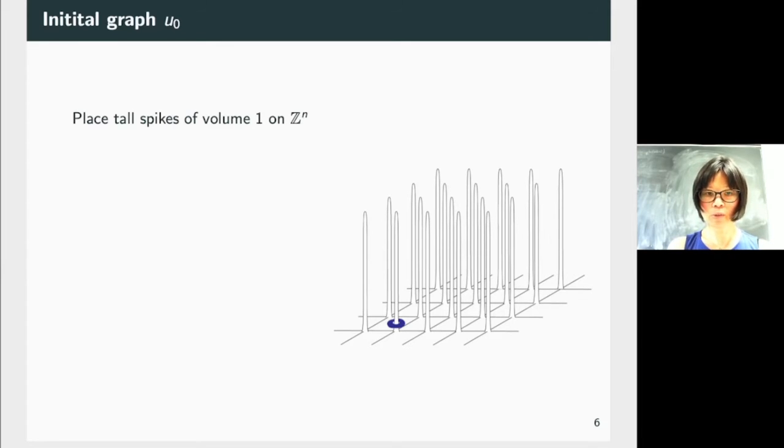And recall also the maximum principle. It says that two surfaces evolving by mean curvature flow, if they are disjoint, they will remain disjoint under the mean curvature flow.